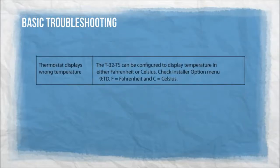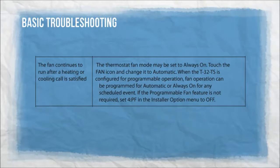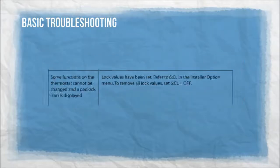Thermostat displays wrong temperature. The T32TS can be configured to display temperature in either Fahrenheit or Celsius — check installer option menu 9TD: F equals Fahrenheit, C equals Celsius. The fan continues to run after a heating or cooling call is satisfied. The thermostat fan mode may be set to always on — touch the fan icon and change it to automatic. When configured for programmable operation, fan operation can be programmed for automatic or always on for any scheduled event. If the programmable fan feature is not required, set 4PF in the installer option menu to off.